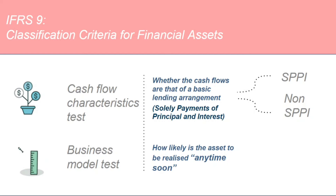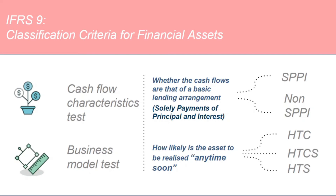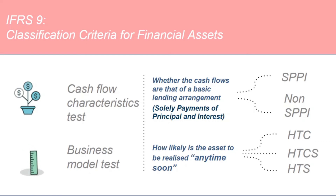The business model test divides the portfolio into three categories. A portfolio can either be held to collect, held to collect and sell, or held to sell. The held-to-sell business model is where we are holding securities to fulfill some liquidity or other requirements, and whenever we find it profitable we sell those securities. The held-to-collect model, as the name suggests, is where we hold securities to collect their contractual cash flows until the securities' maturity — so it's almost unlikely that a security in the held-to-collect portfolio would be sold before maturity.